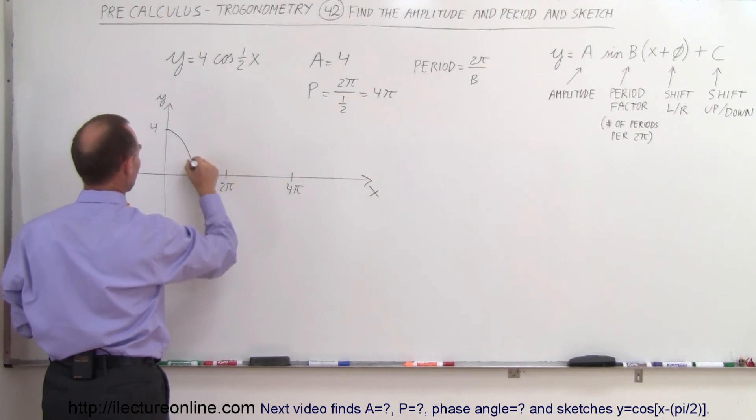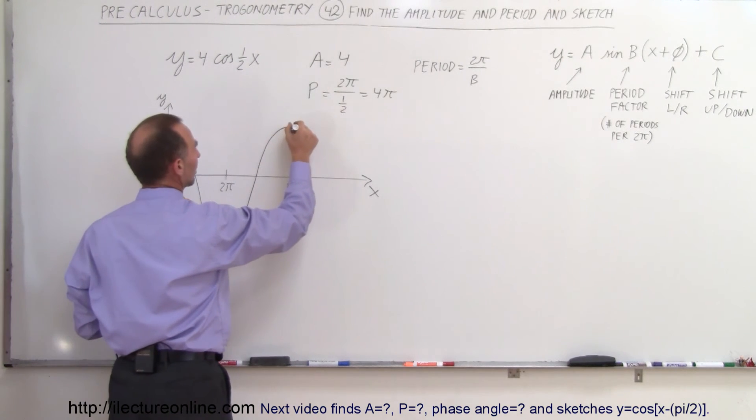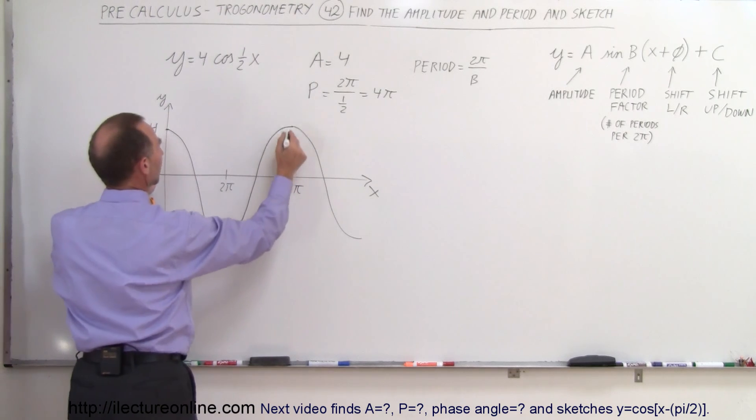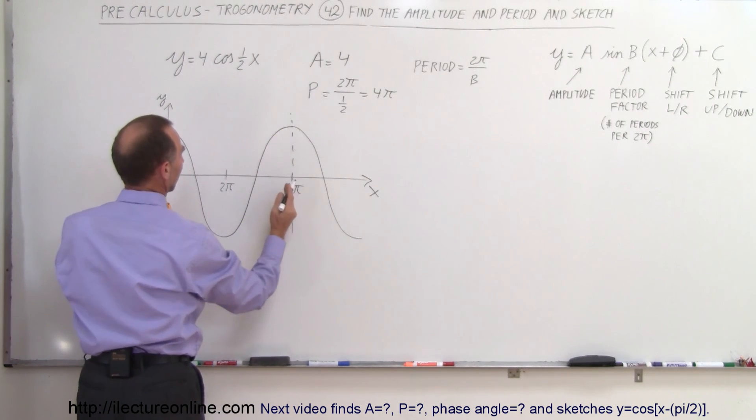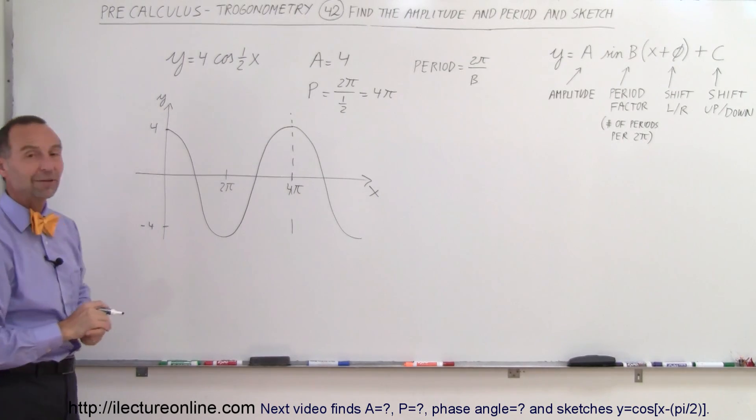So that means we go like this, and that's one full period and then we can continue on like this if we like. So there's one period of the function and it's equal to 4 pi on the x-axis, and that's how we graph that.